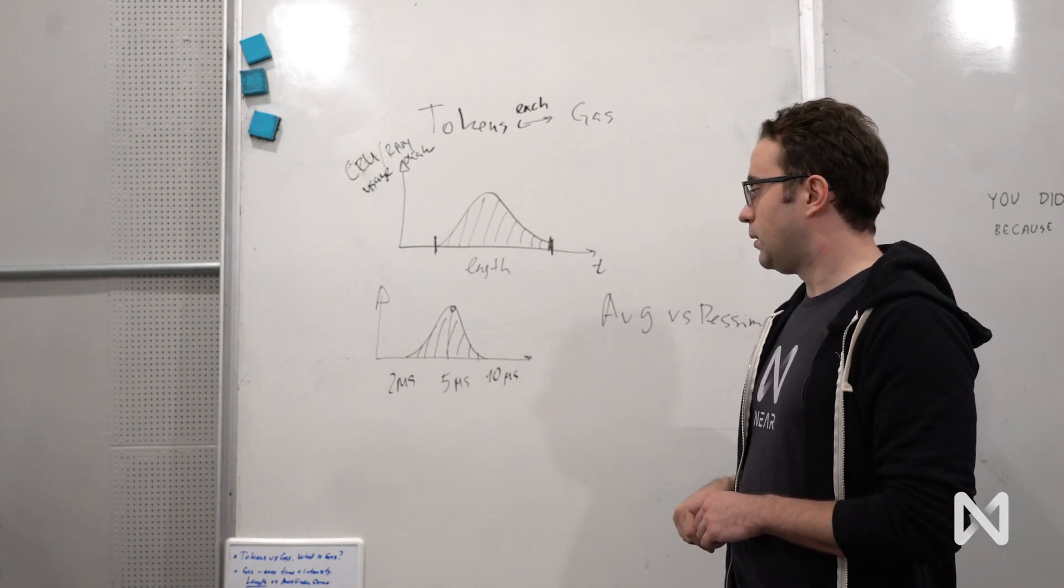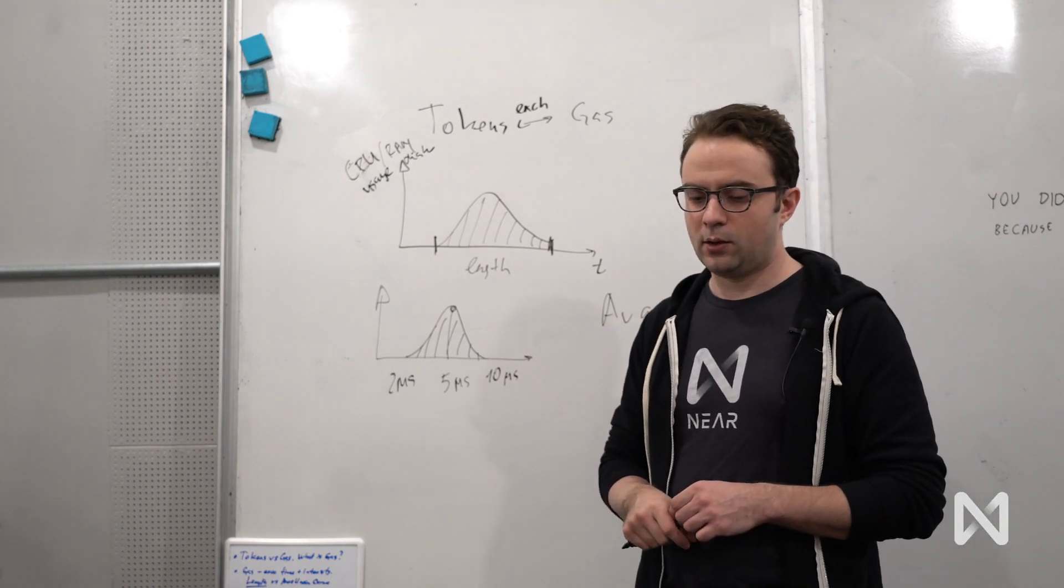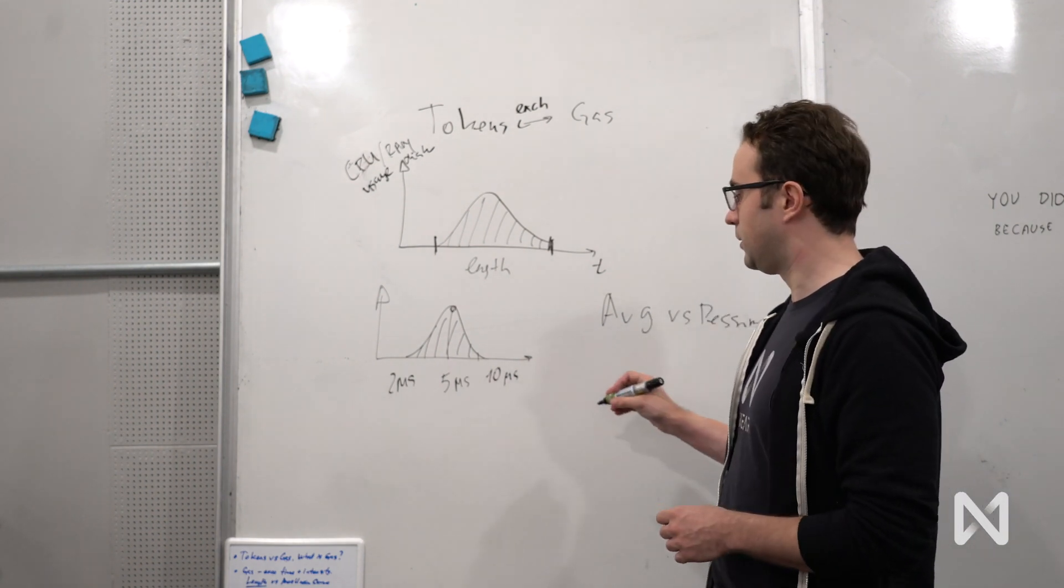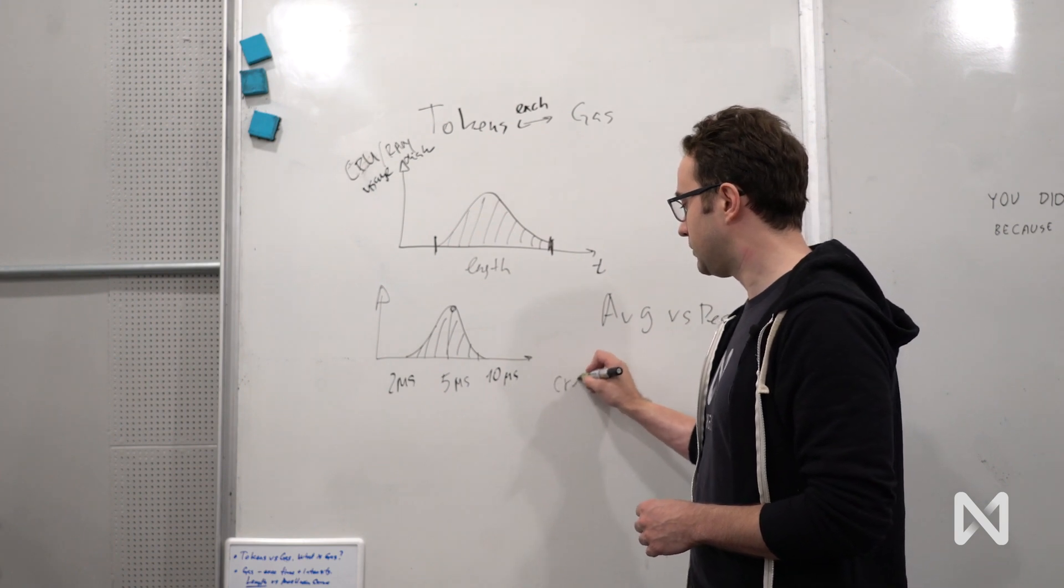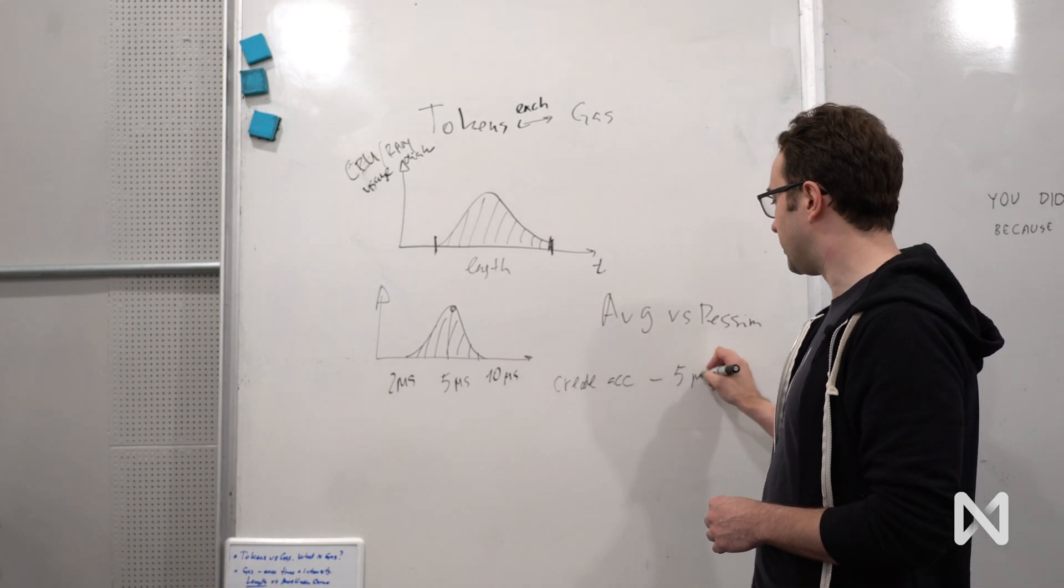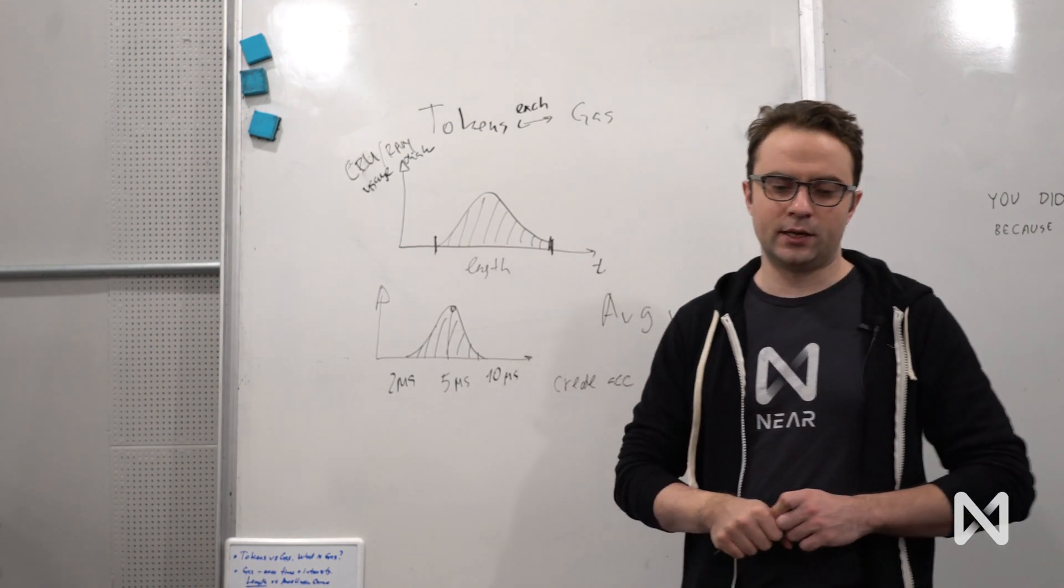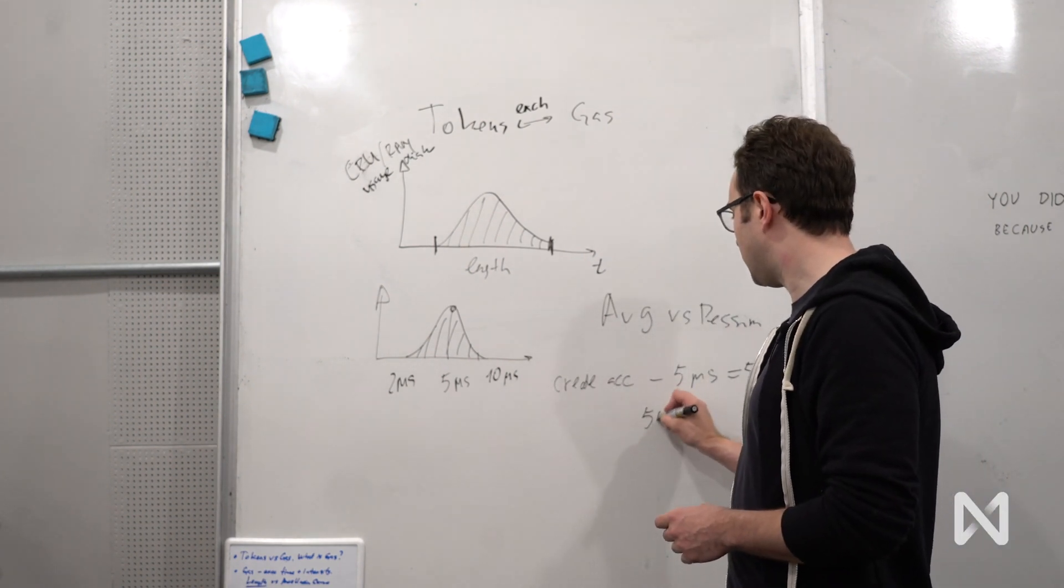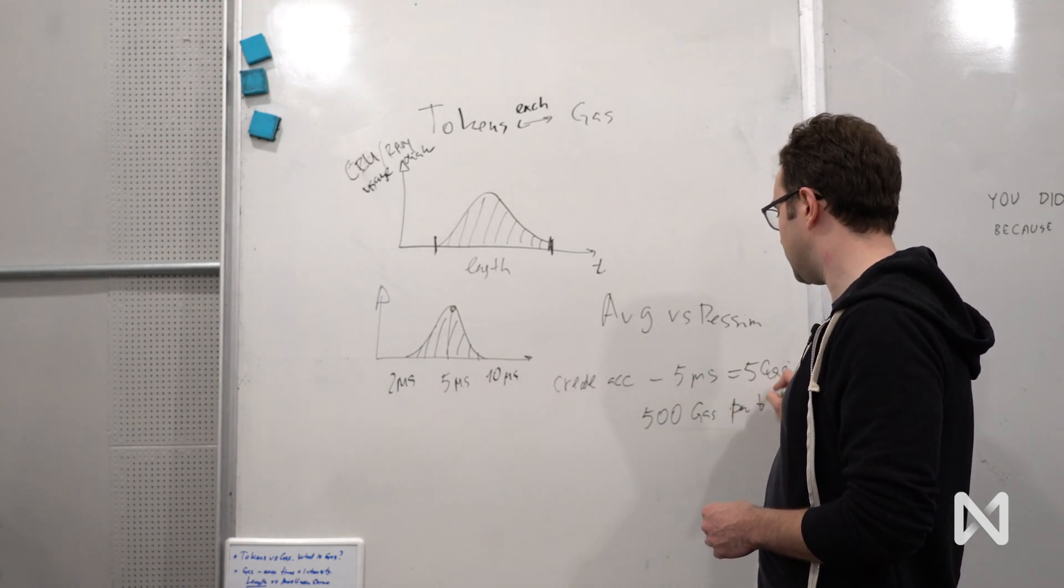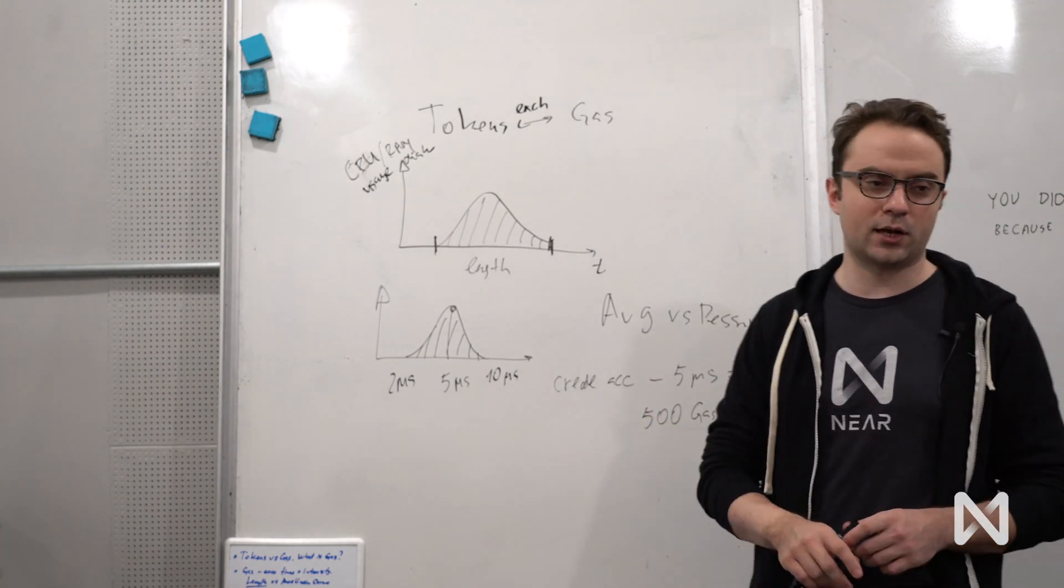We can create a fully pricing model just around average. What will happen if we say, for instance, that create an account takes five microseconds, which is five gas. And we say that you can have only 500 gas per block, because we need to limit how many gas you can use in a single block. So that means that on average, you're going to have 100 account creations in a block.